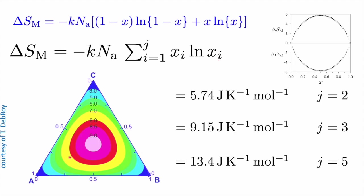Supposing we look at a ternary system — the entropy of mixing is actually at a maximum when the concentrations of A, B, and C are equal. For a two-component system the maximum entropy of mixing is 5.74 joules per kelvin per mole. If you have three components it's greater at 9.15 joules per kelvin per mole, and for five components it's 13.4 joules per kelvin per mole.